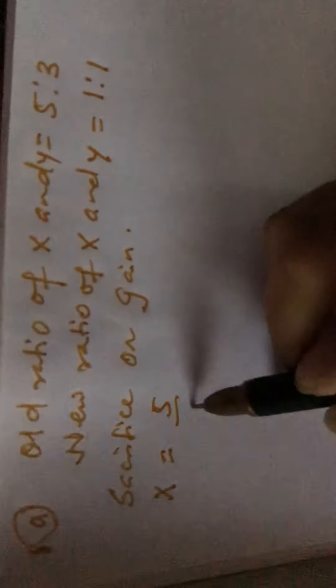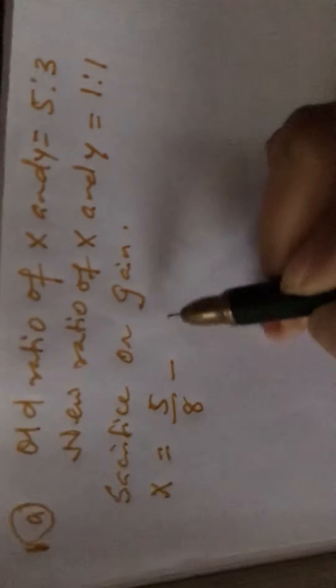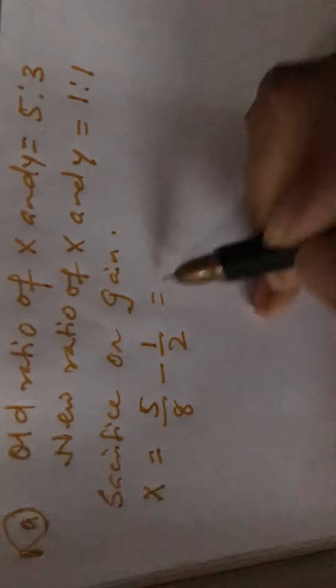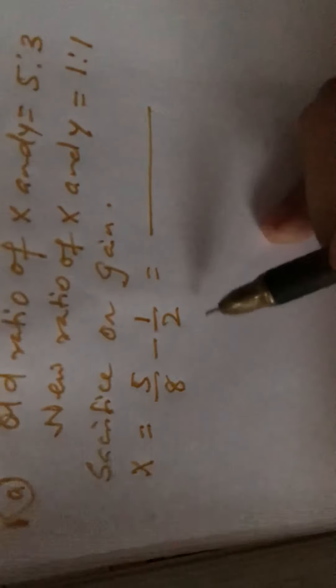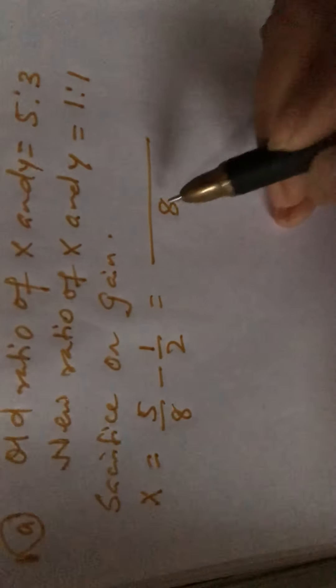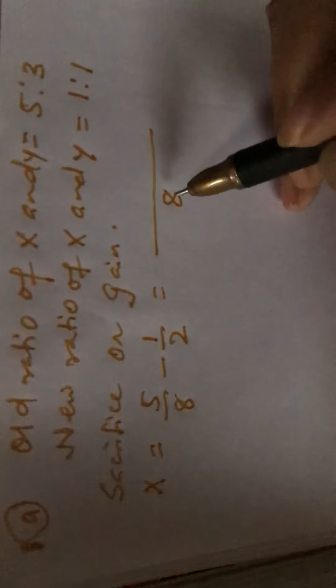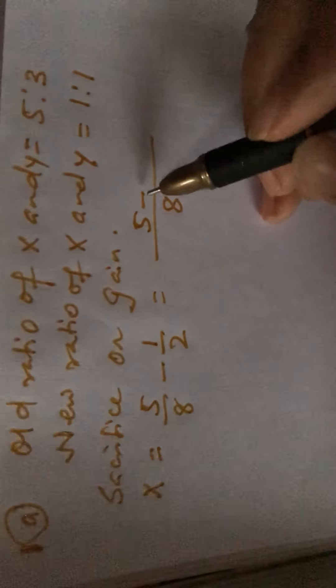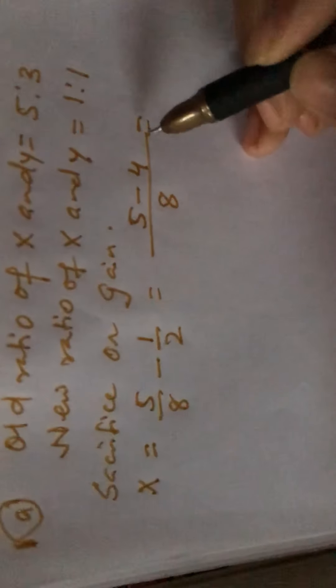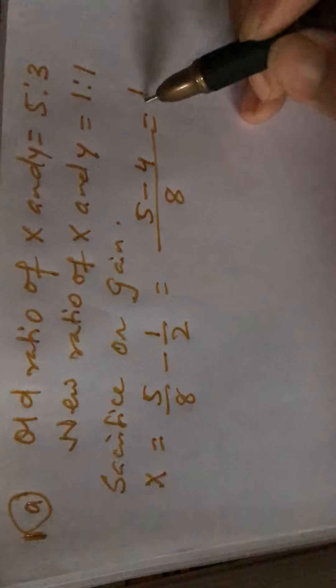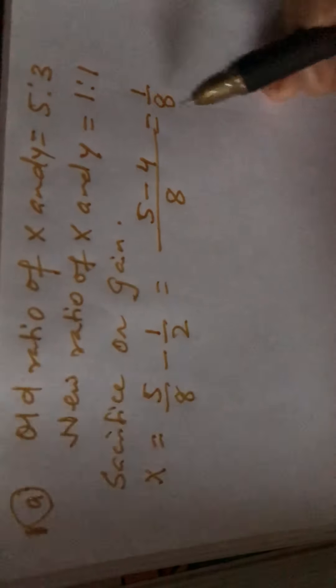So X's old ratio is 5 by 8 minus new ratio is 1 by 2. Now you have to calculate LCM of 2 and 8. 2 fours are 8, LCM will be 8. 1 into 5 is 5 minus 2 fours are 8, 4 into 1 is 4, equals 5 minus 4, 1 by 8. Here answer is positive.